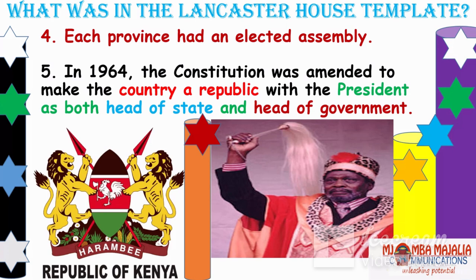Each province had an elected assembly. We had eight provinces: Central, Eastern, Coast, Northeastern, Nyanza, Western, Rift Valley, and Nairobi. In 1964, the Constitution was amended to make the country a republic with the president as both head of state and head of government. We broke away totally from the British monarch. Jomo Kenyatta was installed as president and was both head of state and head of government, whereas before the head of state was the Queen and the head of government was the Prime Minister.